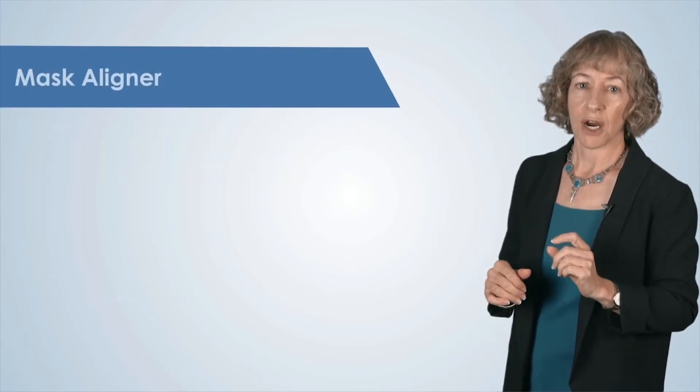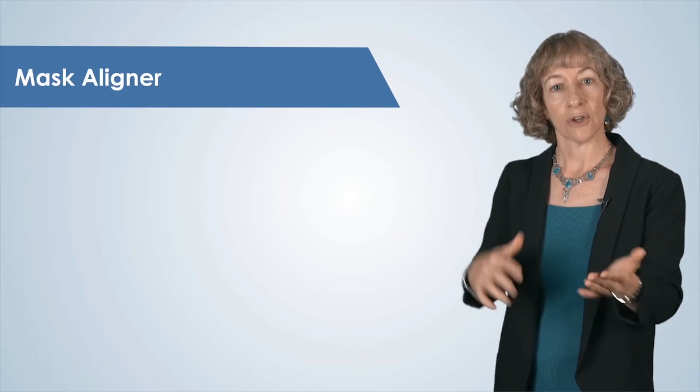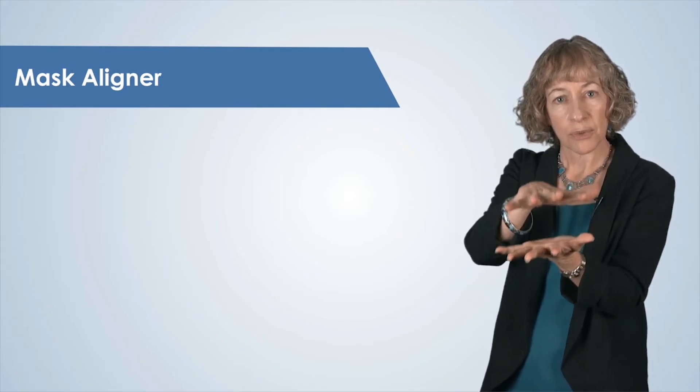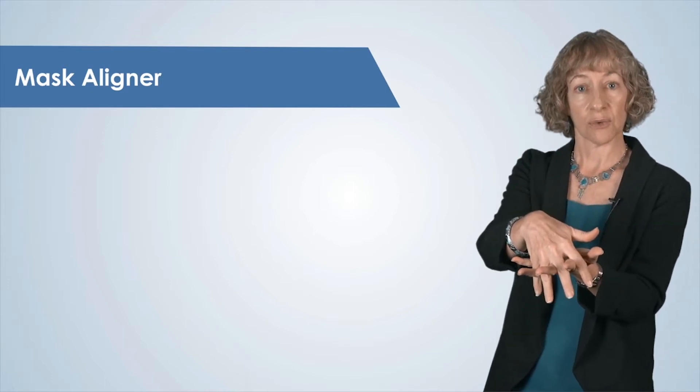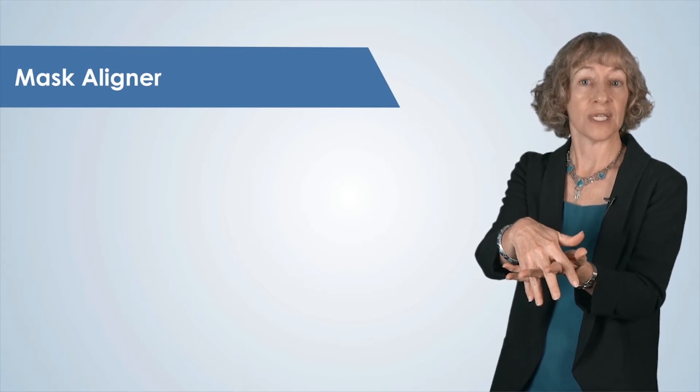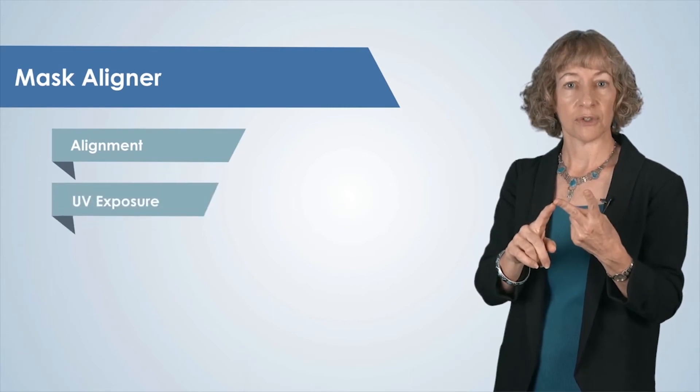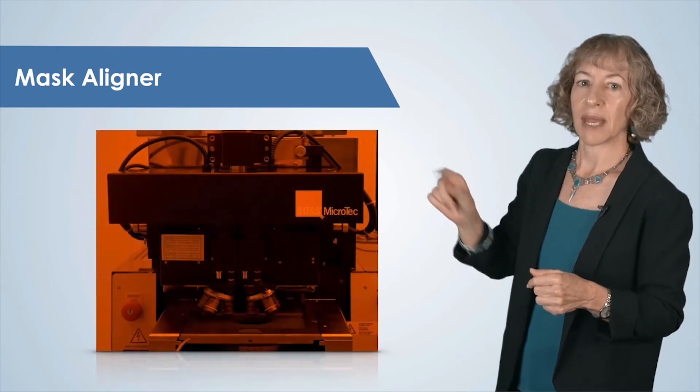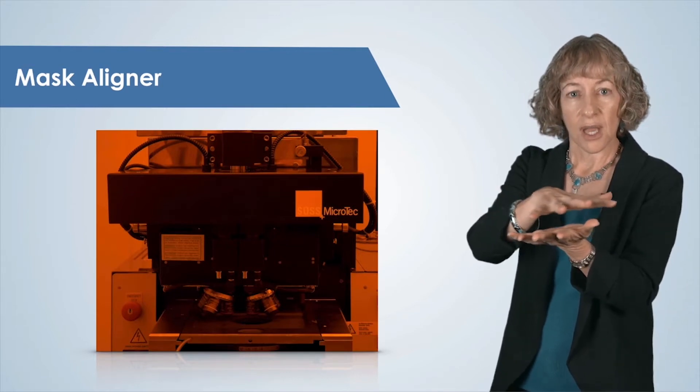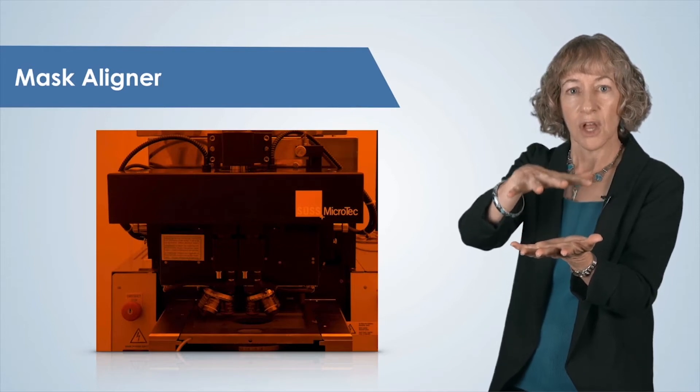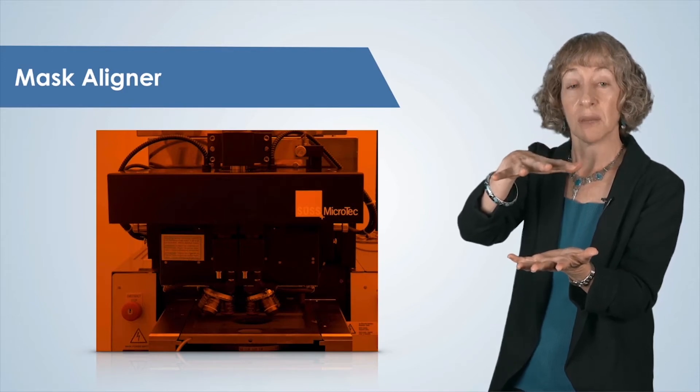To transfer our pattern from the mask to the photoresist, we use a tool called a mask aligner to position the mask at the right place with respect to the substrate, and to illuminate the photoresist with ultraviolet light, also called UV light. These two steps are referred to as alignment and UV exposure. Here's a photo of a mask aligner. The mask aligner is very important because it allows us to position many pattern layers of material, with each layer aligned to each other as they are patterned, and we build up a multi-layer structure.